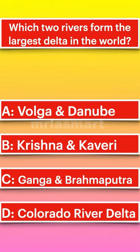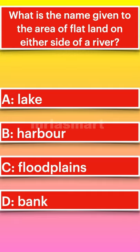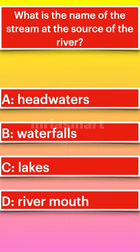Which two rivers formed the largest delta in the world? What is the name given to the area of flatland on either side of a river? What is the name of the stream at the source of the river?